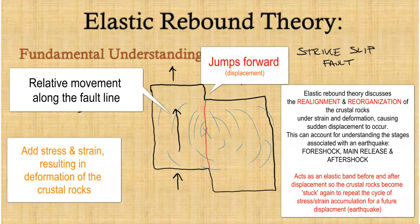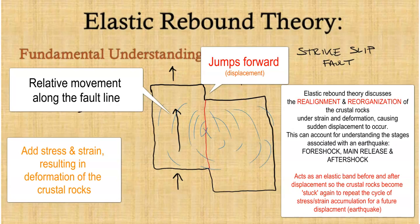The ground moves and displaces, causing small vibrations that could be foreshocks. The main earthquake is the release of energy caused by the displacement and the jump forward. Possible aftershocks occur in the same area or nearby along the fault line as the planar surfaces and crustal rocks reorganize after the displacement — similar to bending a ruler: when you let go, it initially bounces and shakes before dissipating the energy and coming to a still position.